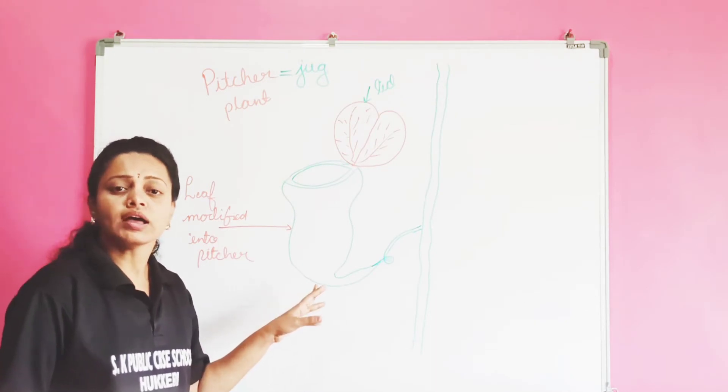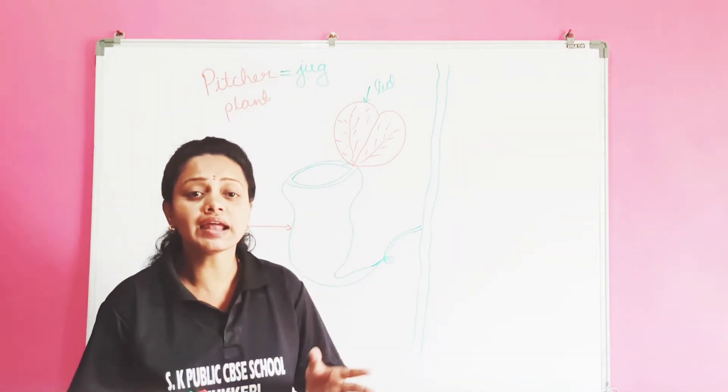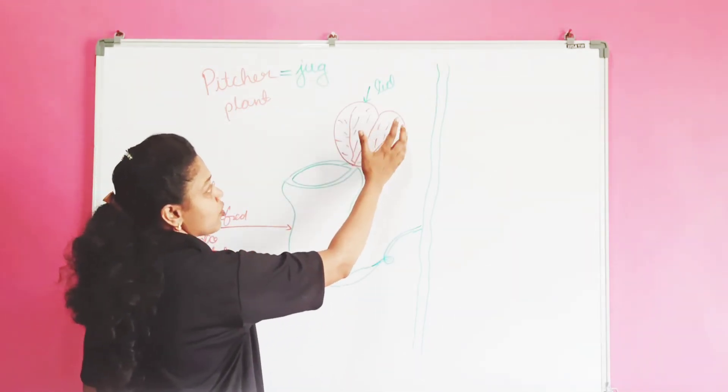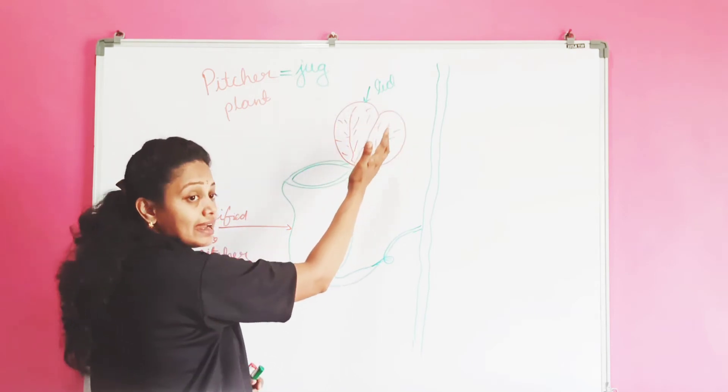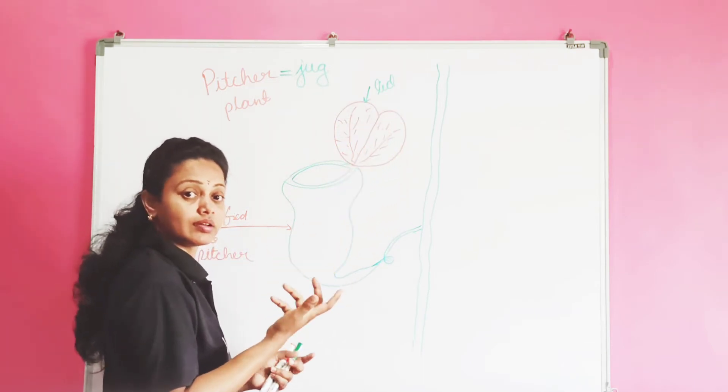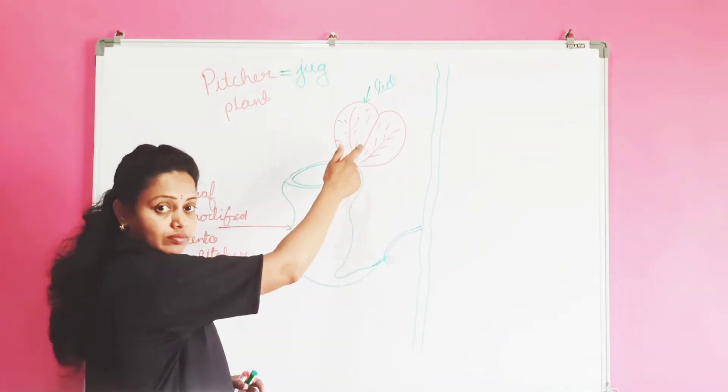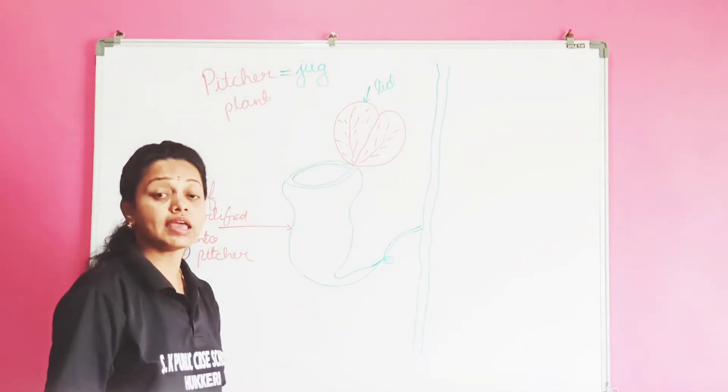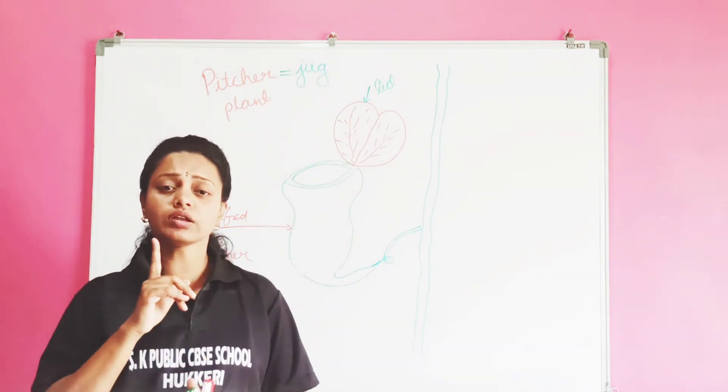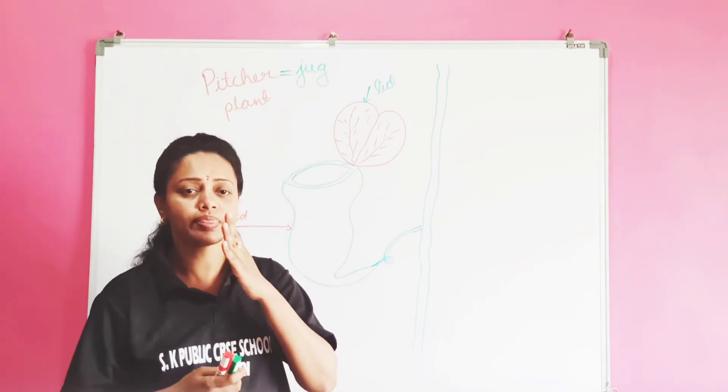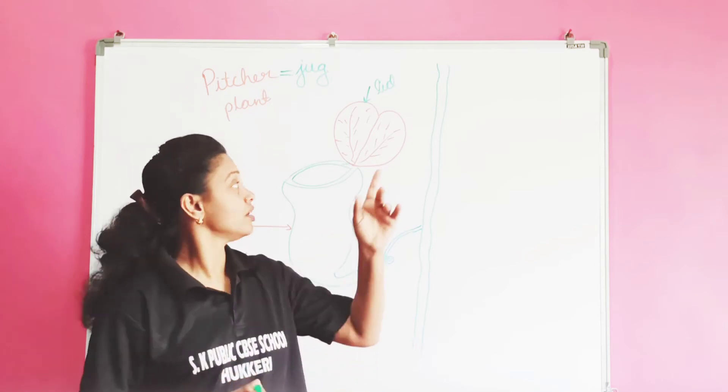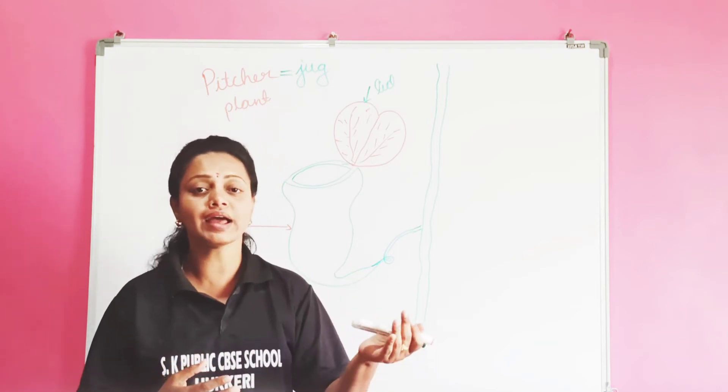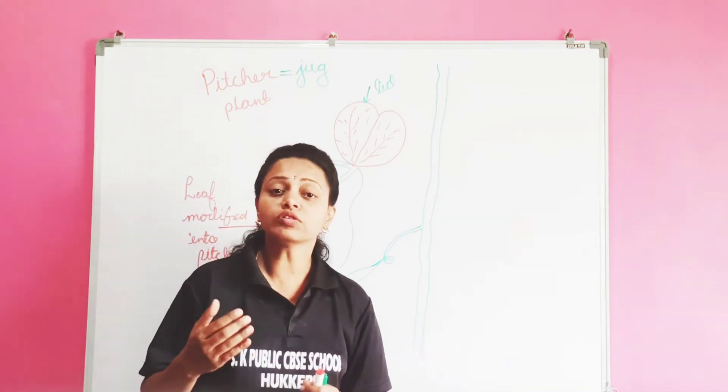Now the apex of the leaf forms a lid which can open and close the mouth of the pitcher. It is modified as a lid. Lid means what? The bottle cap. The cap is called a lid, which can open and close the mouth of the pitcher.